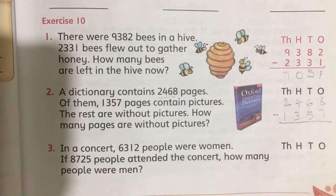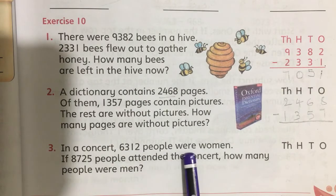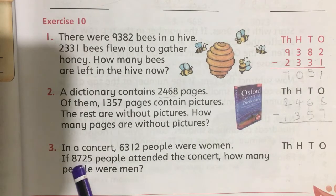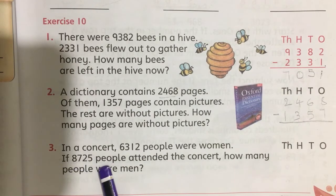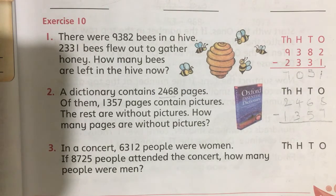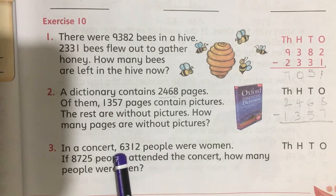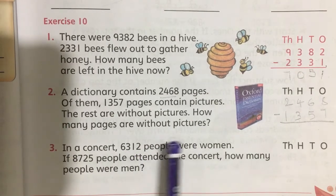Problem 3: In a concert, 6,312 people were women. If 8,725 people attended the concert in total, how many people were men? So in this concert or program or function, a total of 8,725 people attended. How many people were ladies?